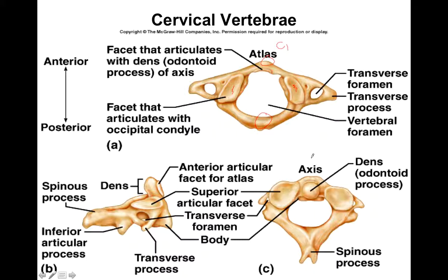The other special one is the axis, which is C2. C2 is special because it has this little dens — it looks like a little tooth. The dens is what the atlas rotates around when you swivel your head back and forth. So this is the area where rotation occurs, and that's only found on C2, the axis.